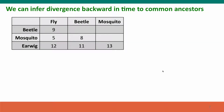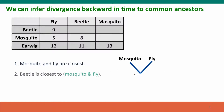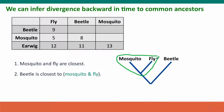Now we can use this to draw a tree. Mosquito and fly are closest. Beetle is closest to mosquito and fly. I'm showing you how it would work — we've got mosquito and fly, and now we're going to treat mosquito and fly as one unit and ask how close are they to beetle?